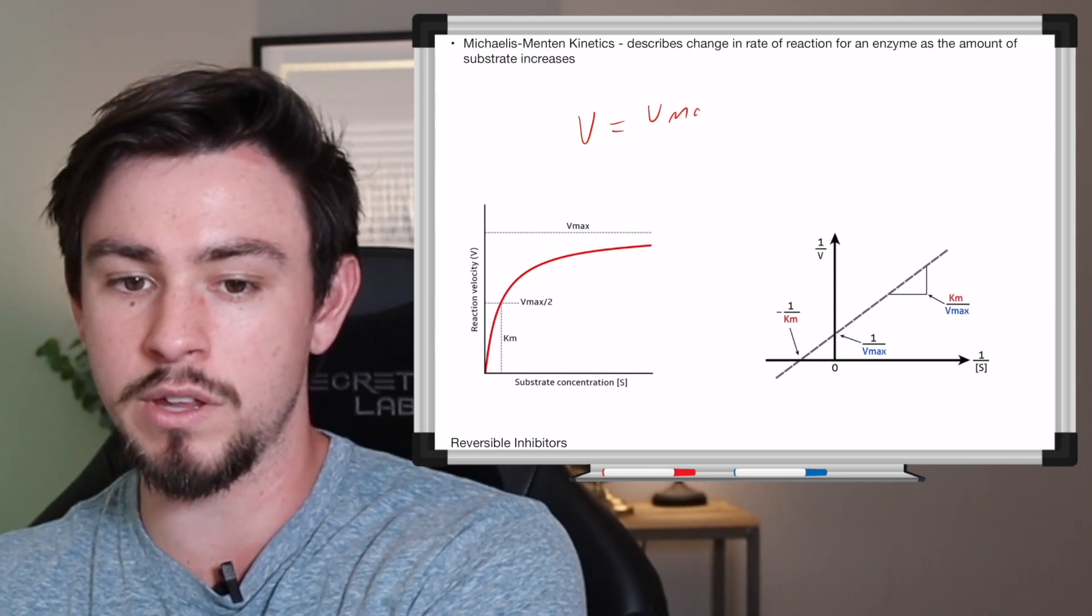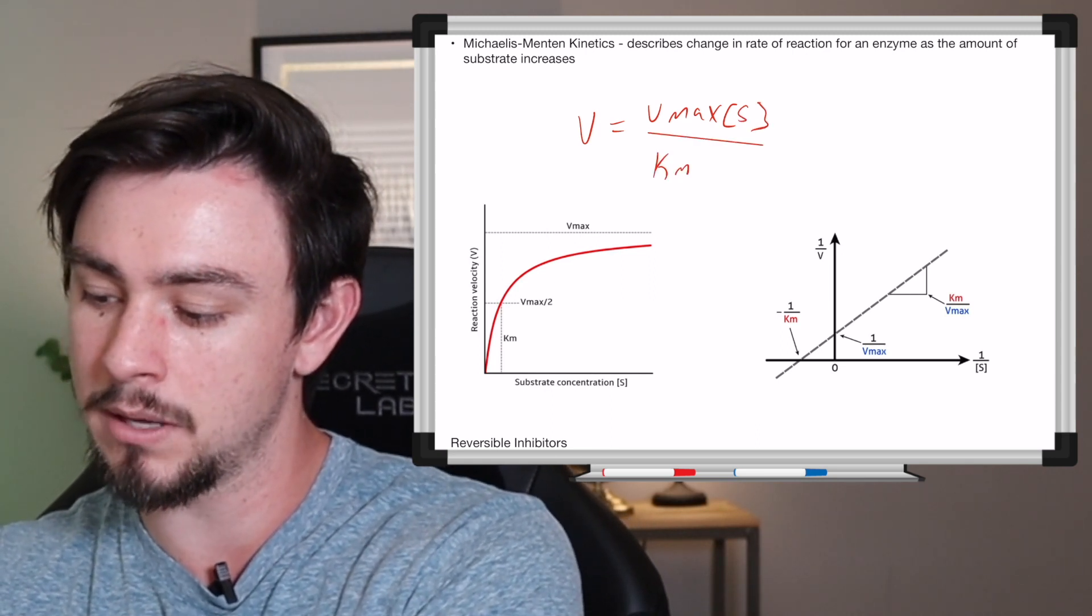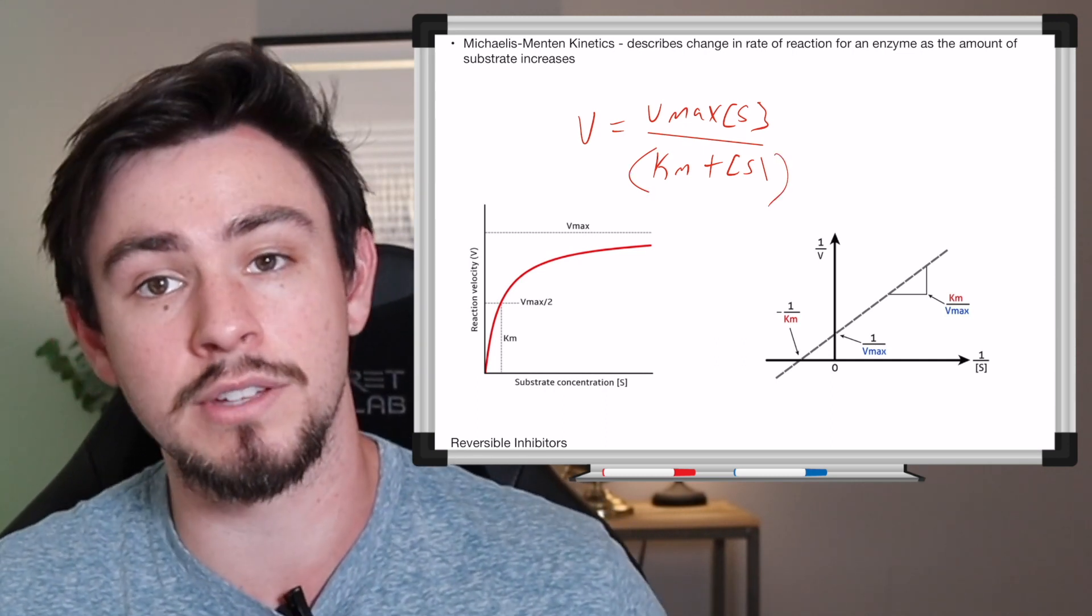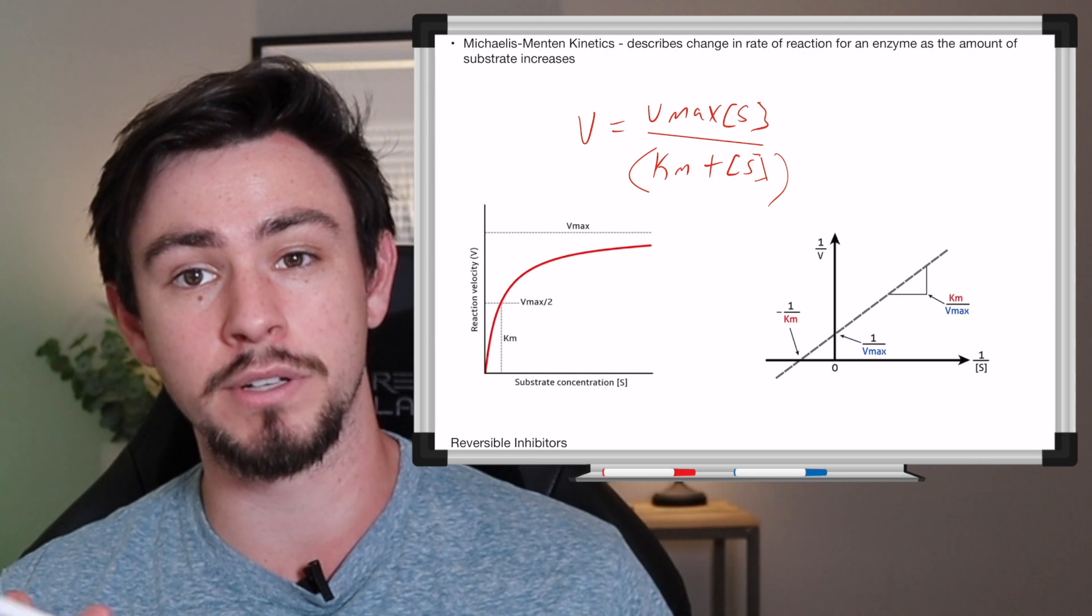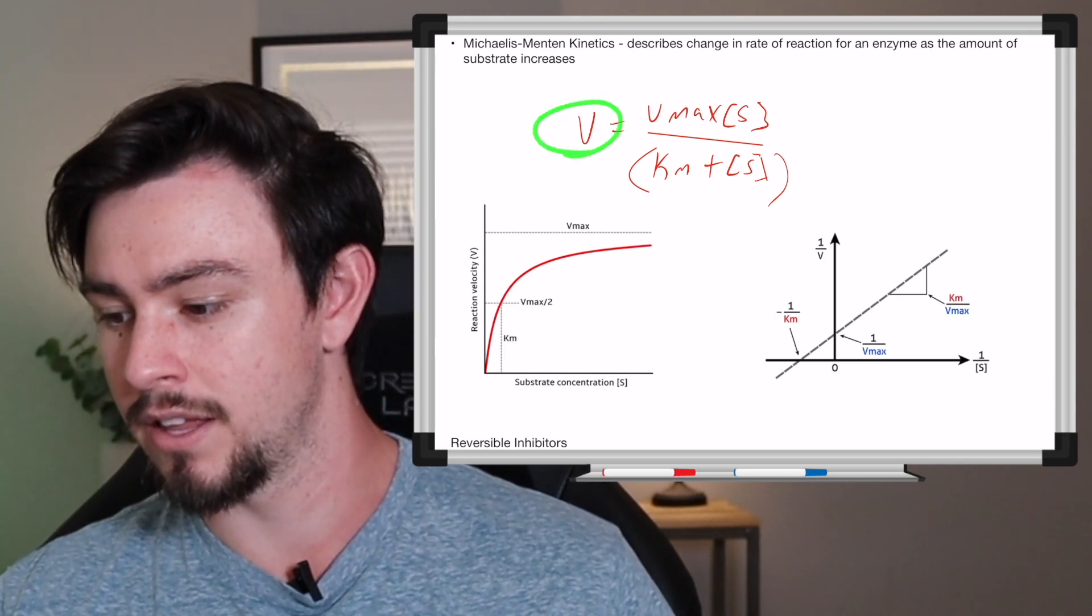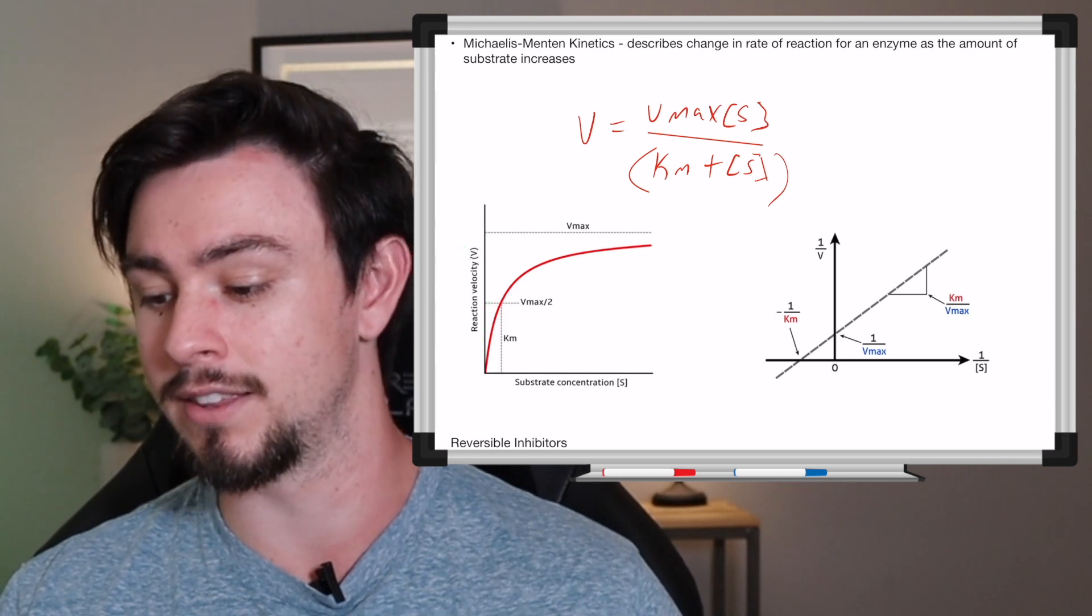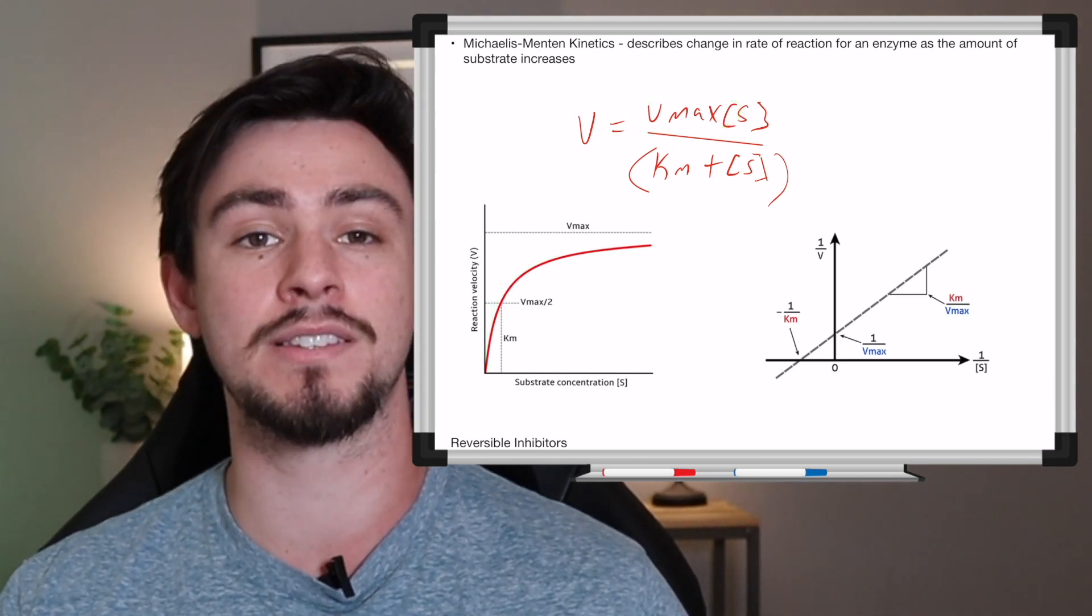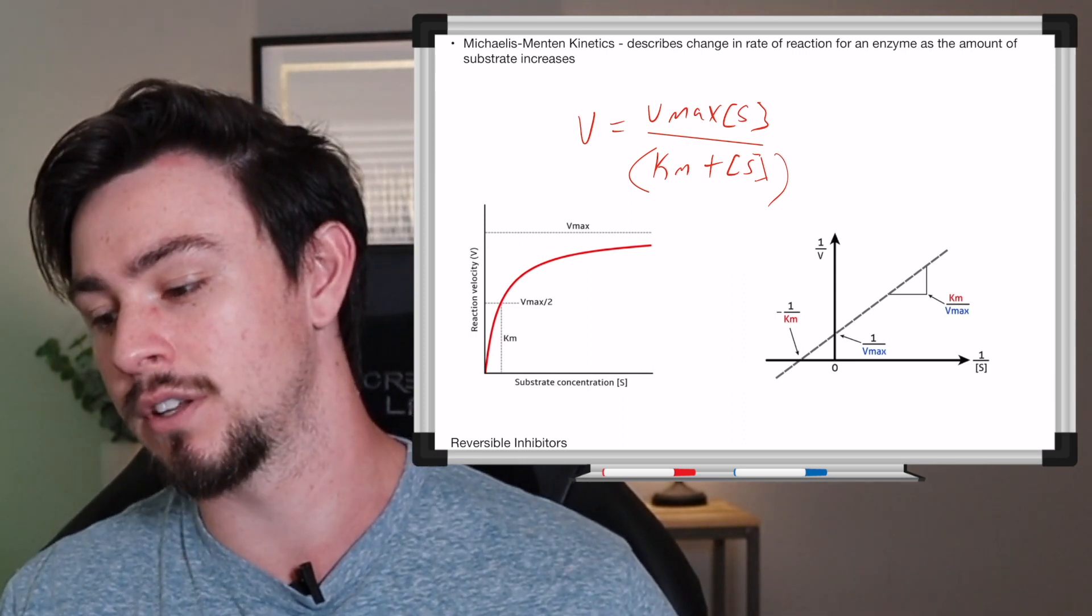So the equation that you need to familiarize yourself with which describes this is V is equal to Vmax times the substrate concentration divided by Km plus the concentration of substrate. Now, yes, you have to do mental math here, but that's just kind of part of it. So let's quickly define these terms, and I'm actually going to point them out on the Michaelis-Menten curve because that's what's really important is being able to recognize these on a curve, and then later on in a Lineweaver-Burk plot. So V is the velocity, that is how fast you are currently converting substrate to product, and so that is going to be represented by the y-axis. You can see that that velocity changes as we change the substrate concentration.